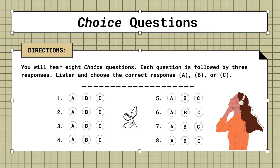Mini-test. Choice questions. You will hear eight choice questions. Each question is followed by three responses. Listen and choose the correct response. A, B, or C.